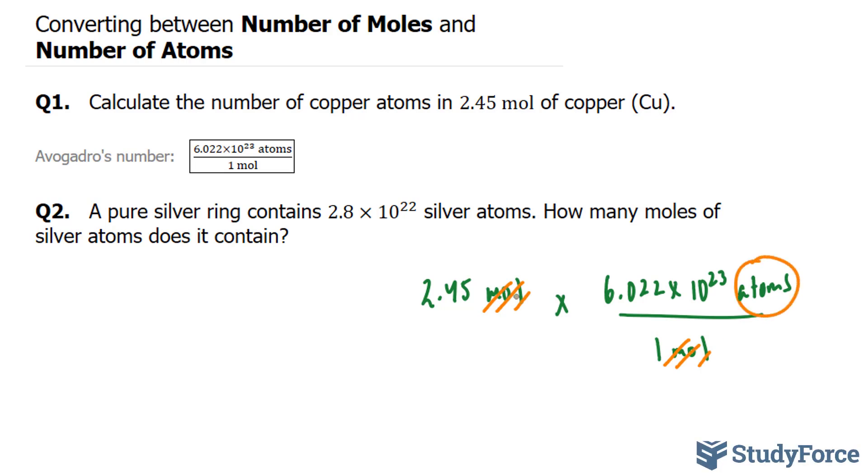The reason why the mole units cancel out is because we're dividing. Think of a number like 2 divided by 2 becomes 1. So mole divided by mole is 1.